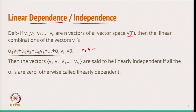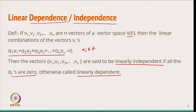We are setting this linear combination equal to 0 because 0 lies in the vector space — it is the additive identity. The vectors V1, V2, ..., Vn are said to be linearly independent if all the alpha_i's are 0. Otherwise, they are called linearly dependent. This is the definition of linear dependence or independence.